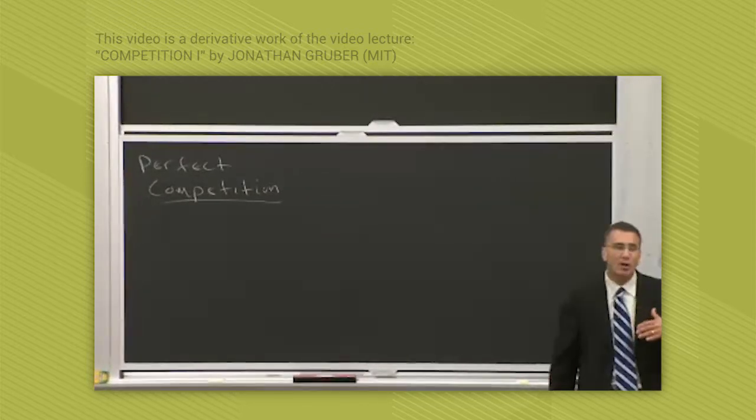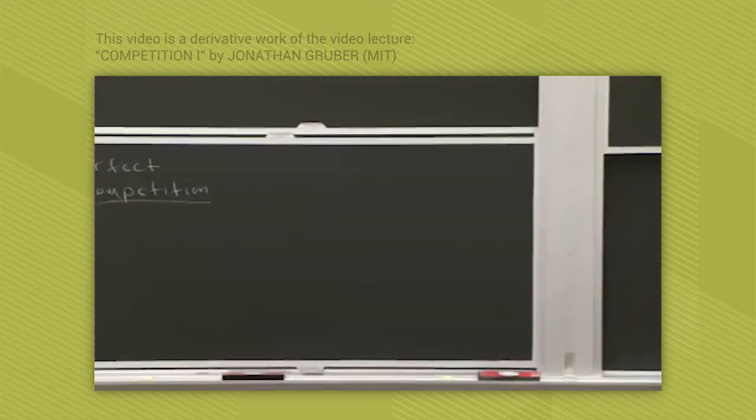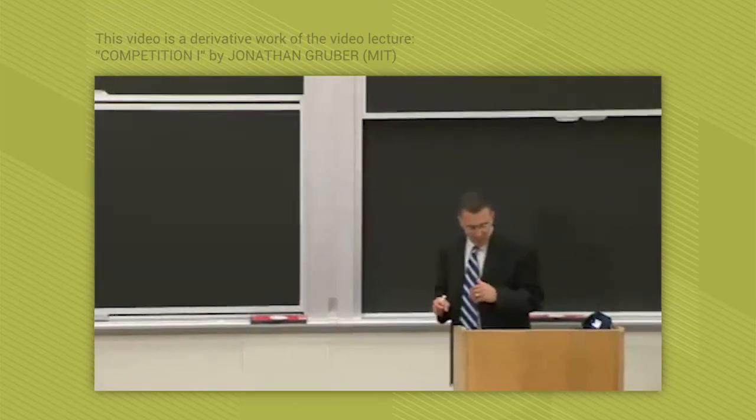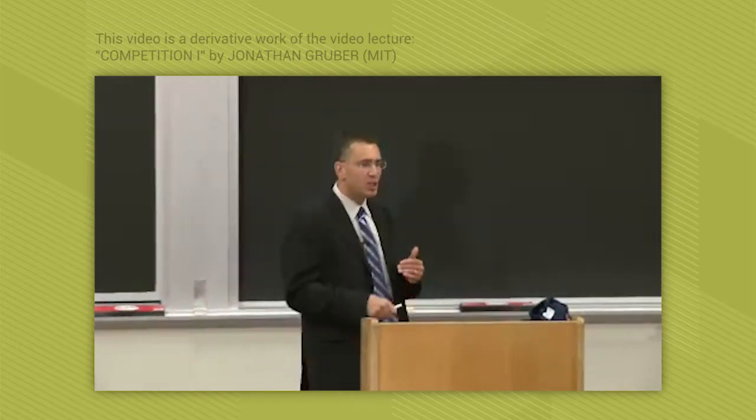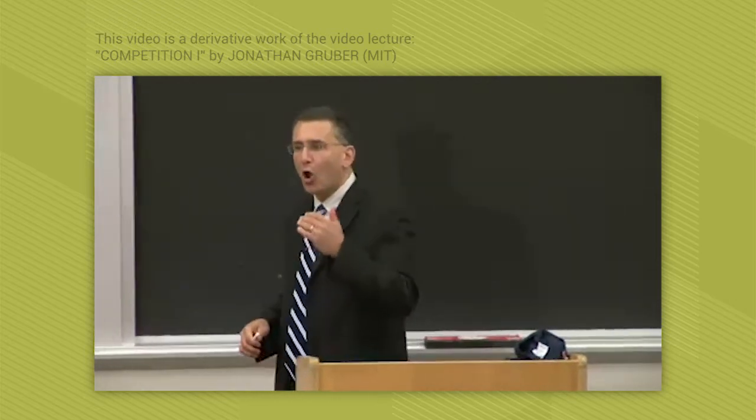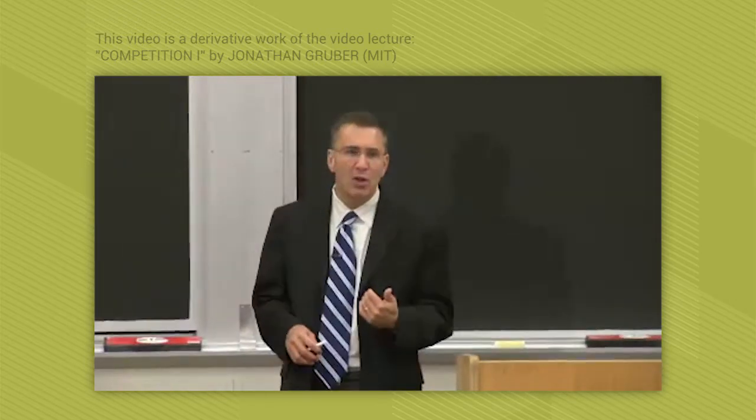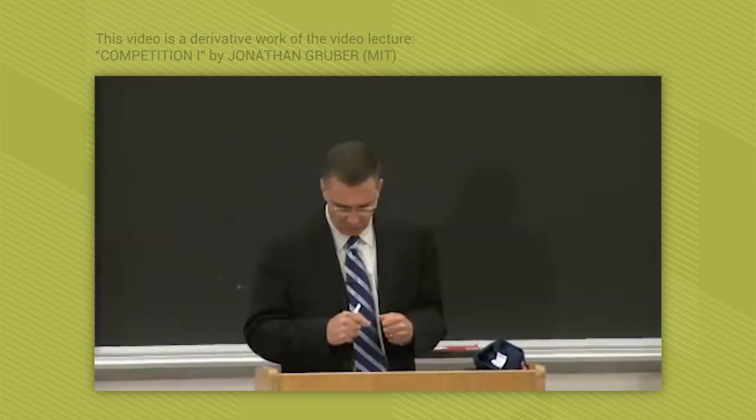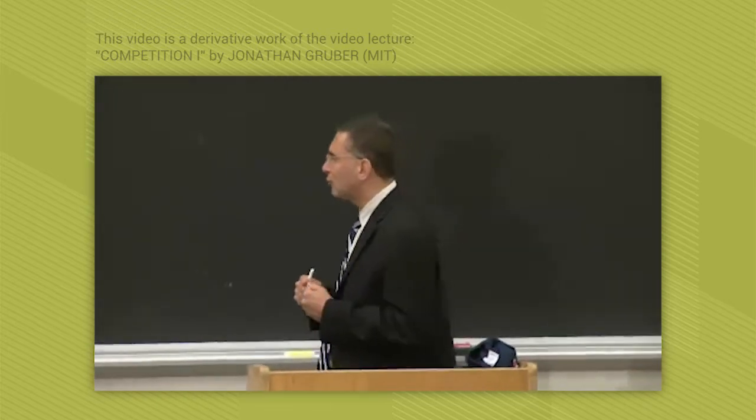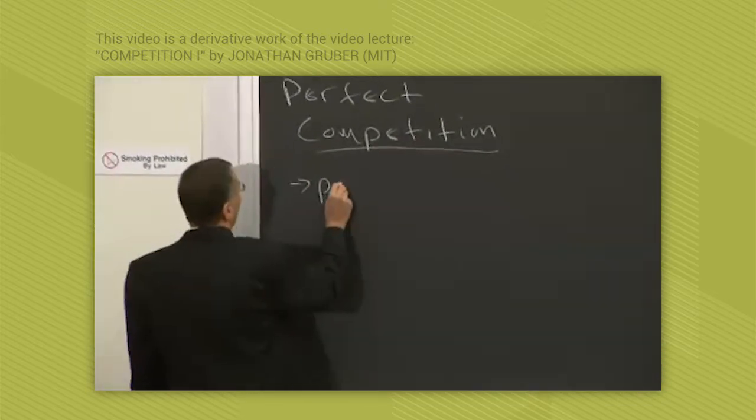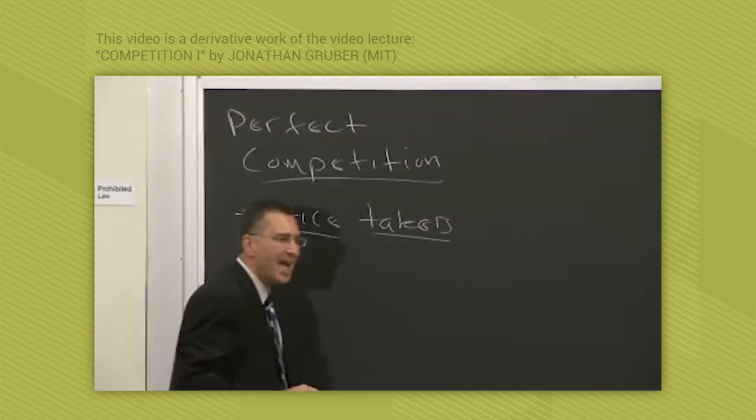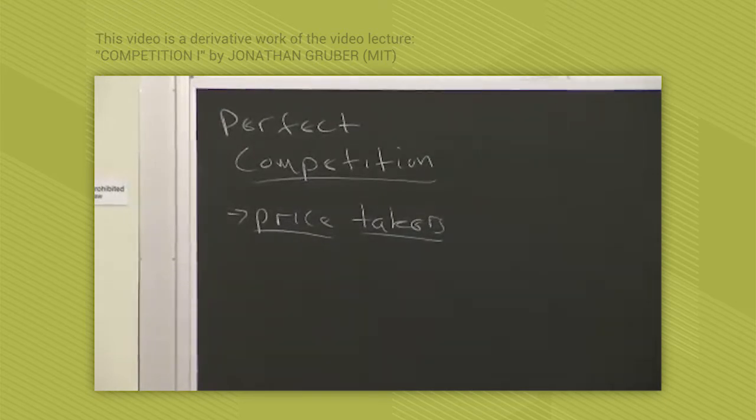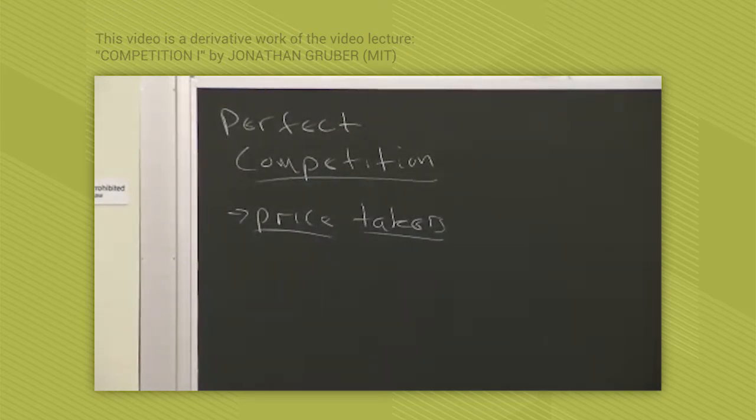But today we're going to start with our benchmark of perfect competition. Now what is perfect competition? Technically, perfect competition exists whenever firms are price takers on both the output and input markets. That is, no action that they take can affect either the price at which they sell their goods or the price that they pay for their inputs.